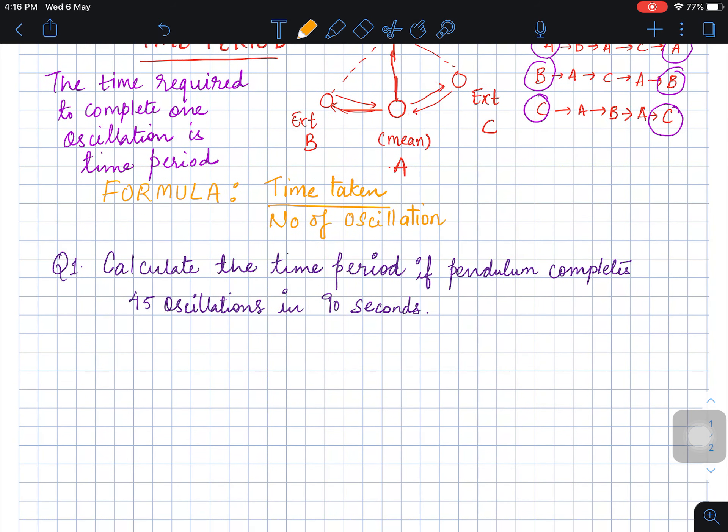So here the question is, calculate the time period if the pendulum completes 45 oscillations in 90 seconds. Now you have this formula, so time period is equal to time taken upon number of oscillations.